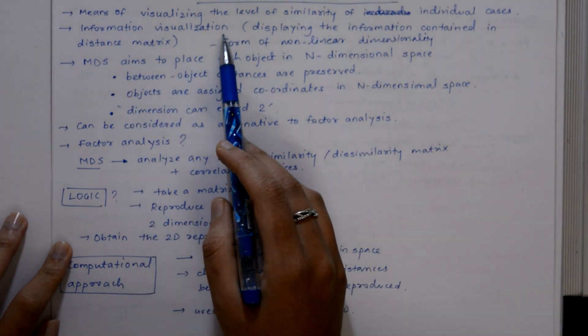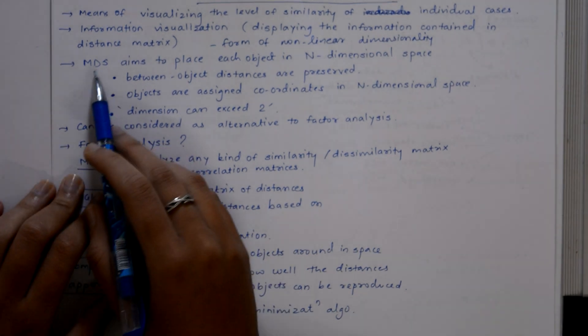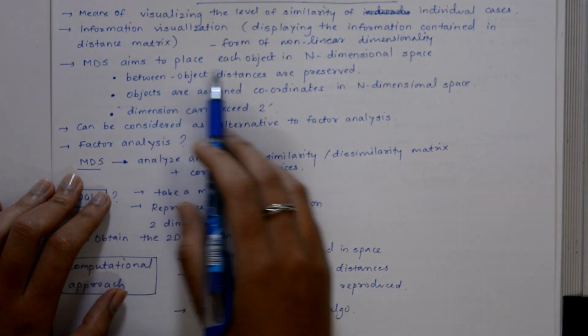It refers to a set of related ordination techniques used in information visualization, in particular to display the information contained in a distance matrix. It is a form of nonlinear dimensional reduction.